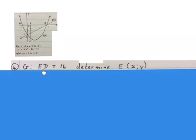They say given ED equals to 16. So from there to there is 16 units. Determine the coordinate of e. We have to find out what the coordinate there at e will be.